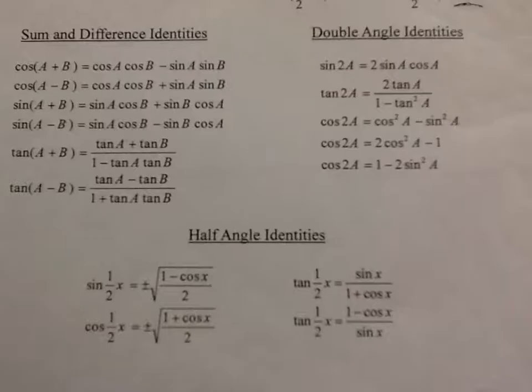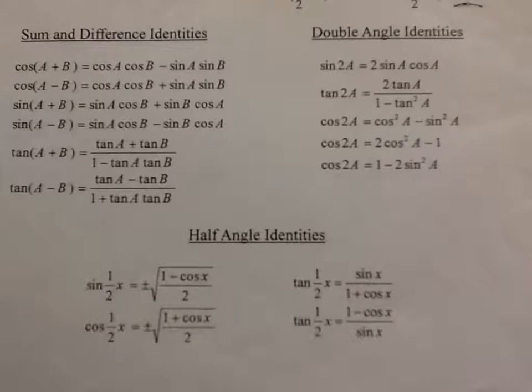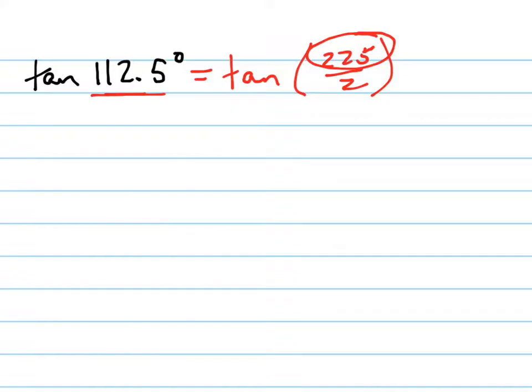And so what I'm going to use is the half angle formula. Look at my cheat sheet here. This is the tangent half angle formula. It's right here. I can choose either one of these to use. So I prefer this one because I like the denominator to be simpler. So 1 minus cosine x over sine x.